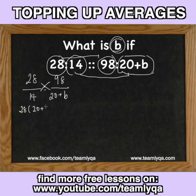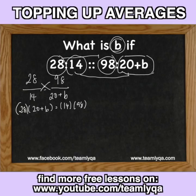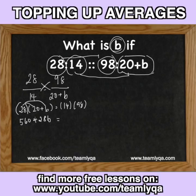28 times (20 plus B) is equal to 14 times 98. What I do is just 14 times 100 — this is going to give me 1,400. Then I subtract 2 times 14, which is 28.